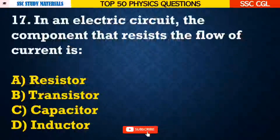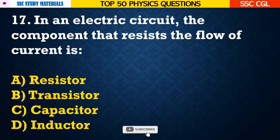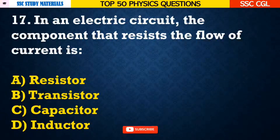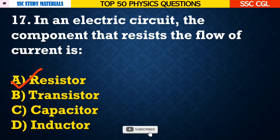Question number 17: In an electric circuit, the component that resists the flow of current is — Answer A. Resistor.